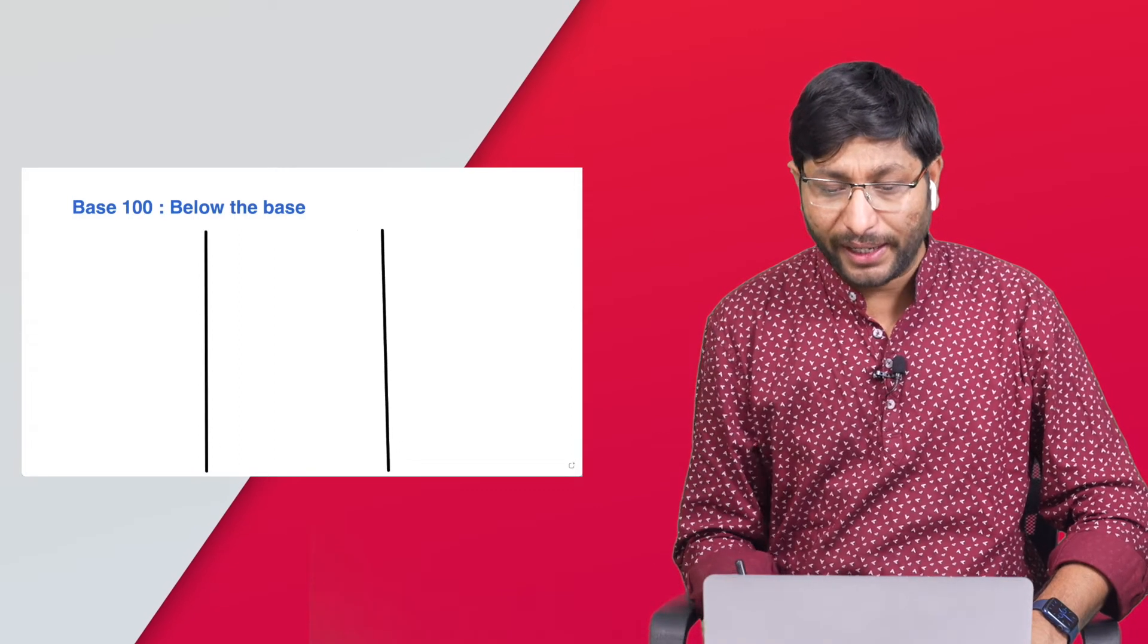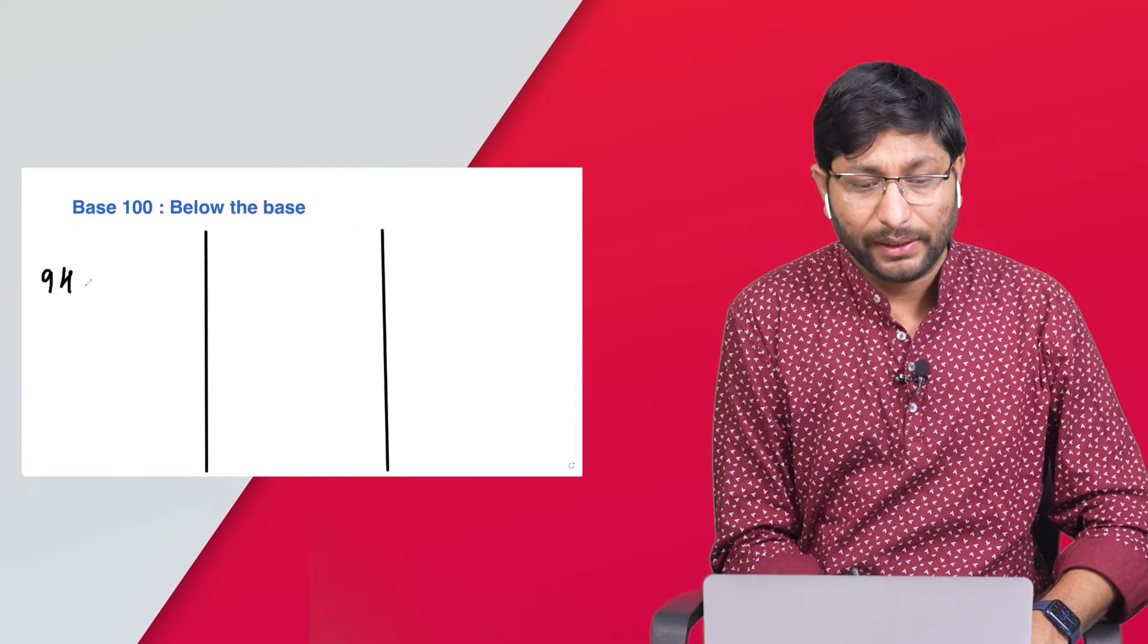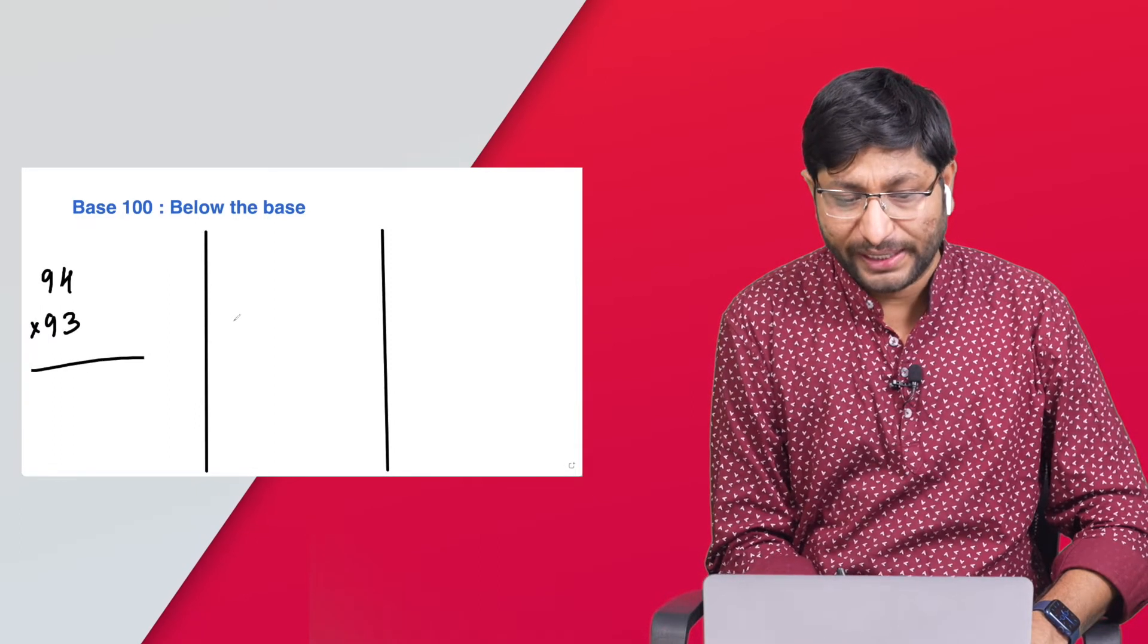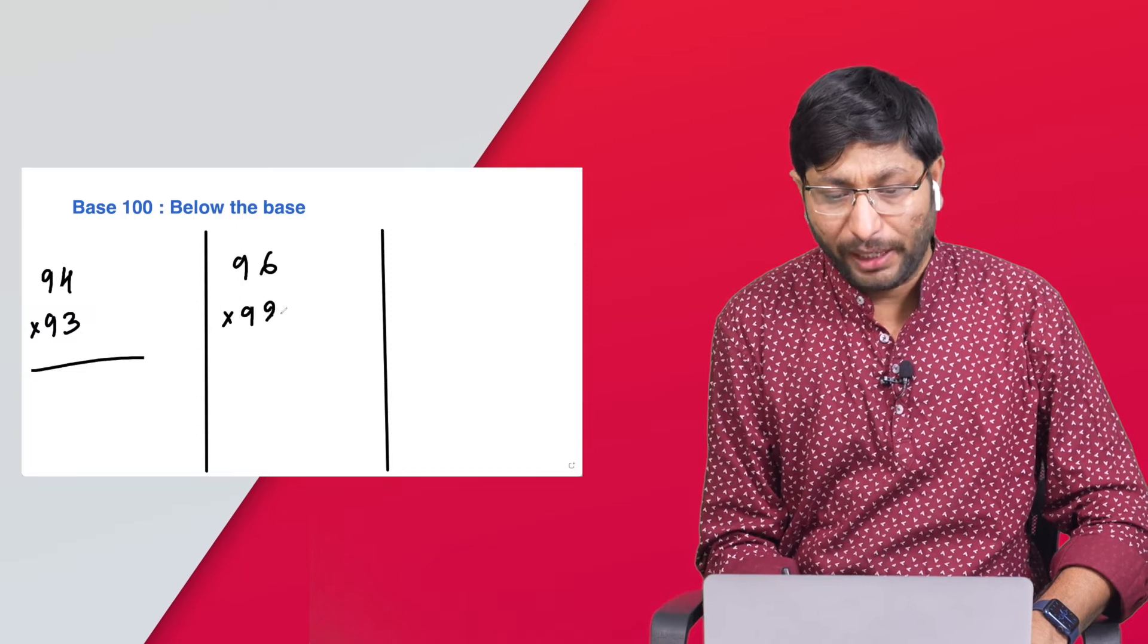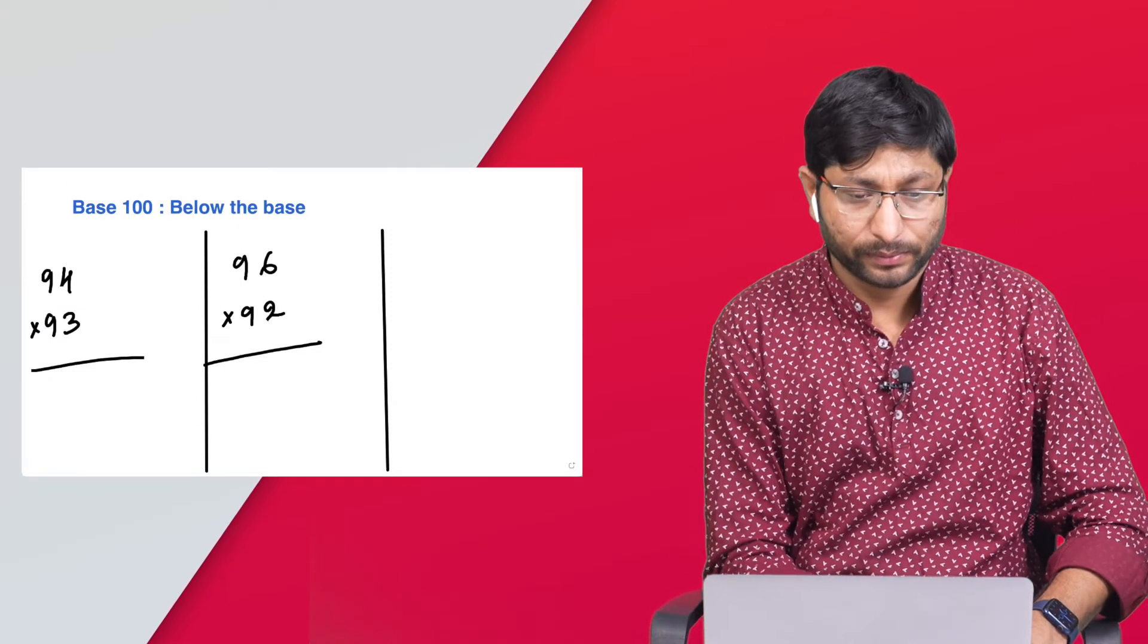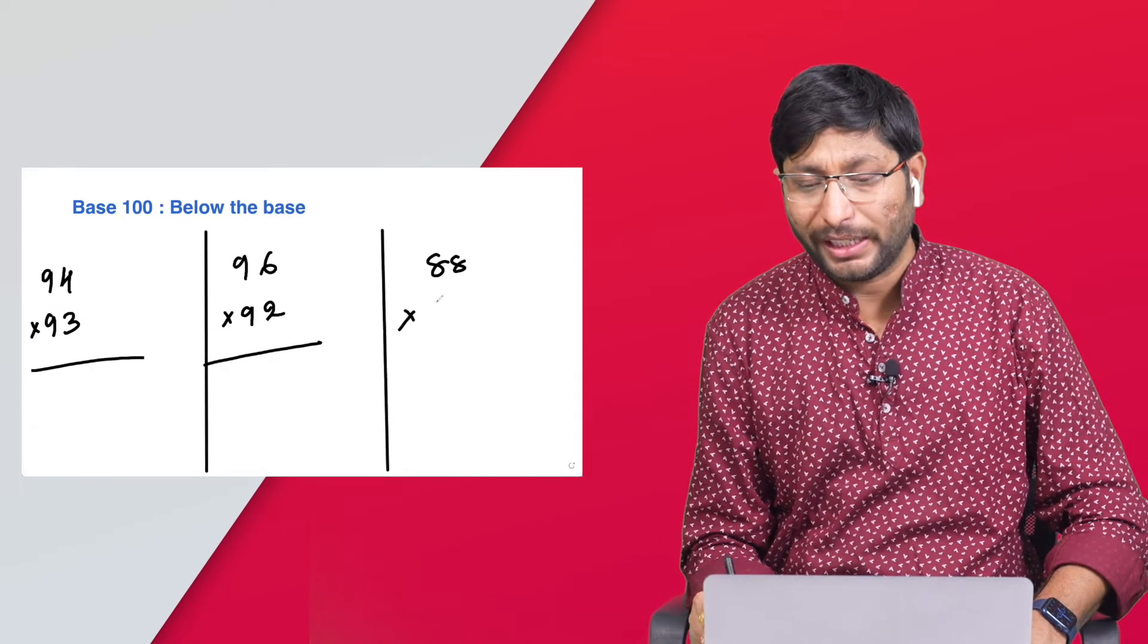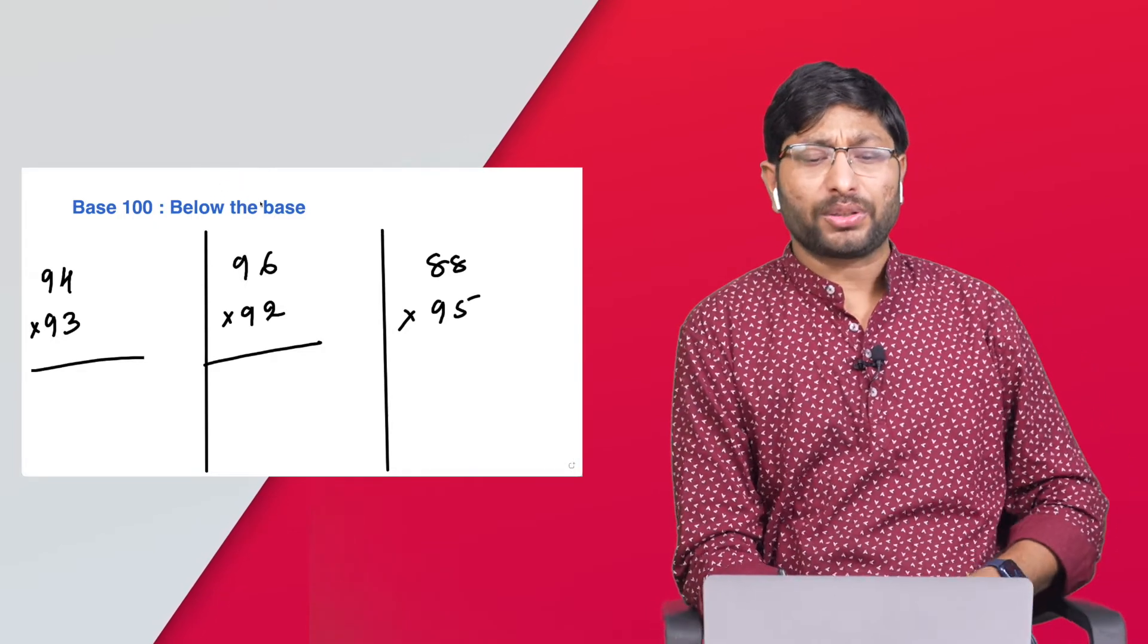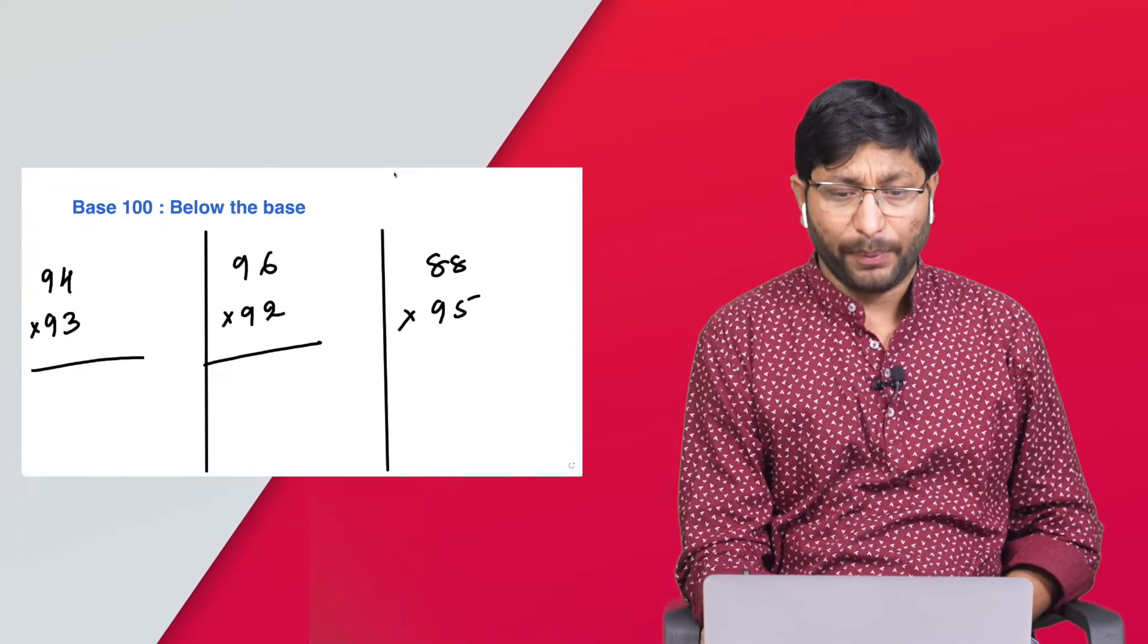Base 100 and below the base. If you take 100 as the base number, below the 100: 94 multiply with 93, 96 multiply with 92, next 88 multiply with 95.